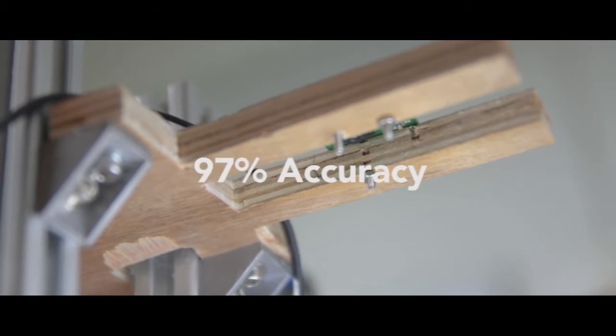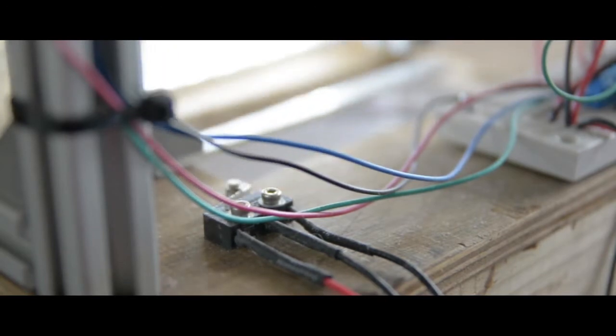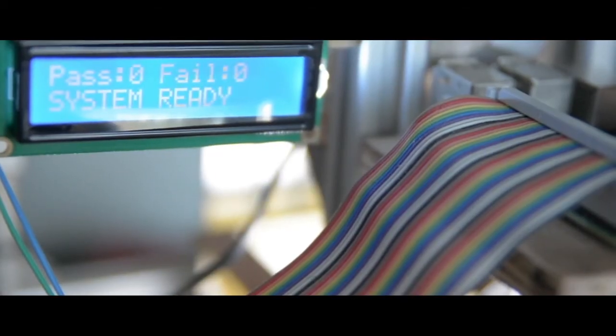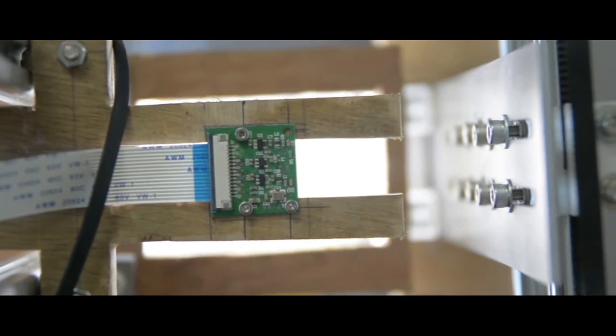When starting up the system, the sorting arm performs a homing function. Then the blister pack for inspection is loaded into the inspection area. The sensor detects the presence of the blister pack and an image of the blister pack is captured.